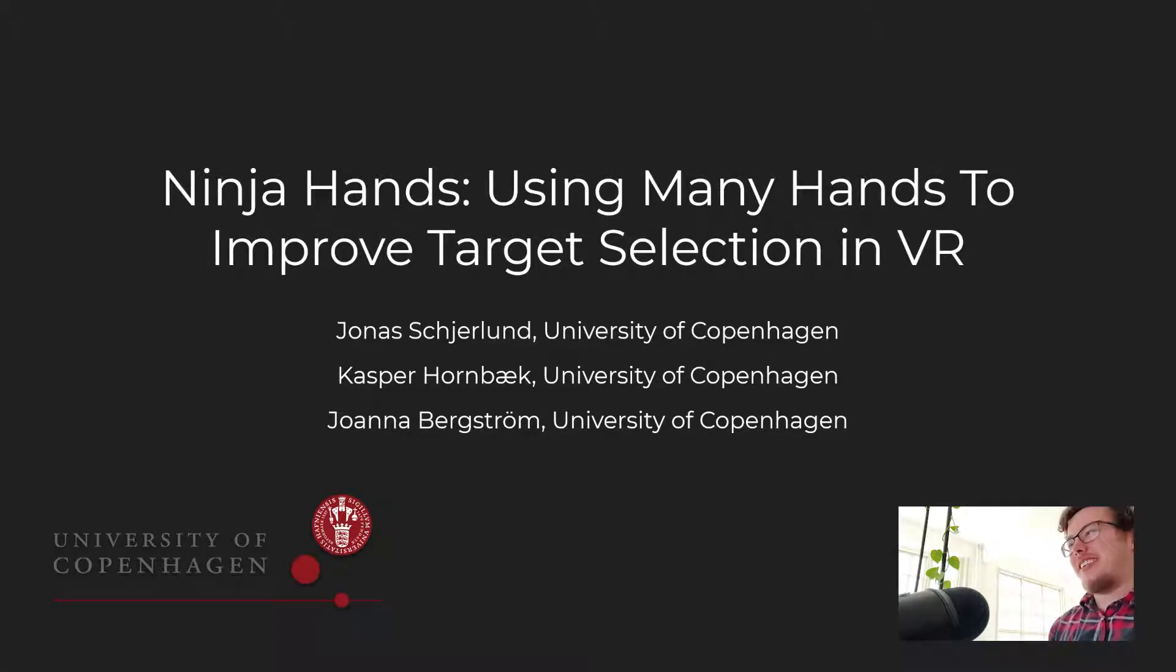Hi, my name is Jonas Scherlund and I'm a PhD student at the University of Copenhagen in Denmark, where I work with my supervisors Caspar Hornbeck and Joana Bauston. Today I'm very excited to be here and present our work, Ninja Hands, using many hands to improve target selection in virtual reality.